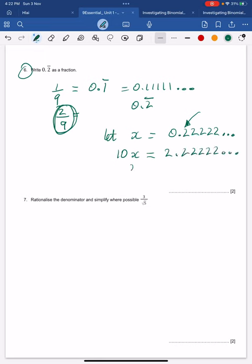Then if I copy and paste the first equation down again, now if I subtract both sides, can you see what you get? You get 9x here, and can you see that you get all the 2's cancelling out here? And you get 2, therefore x equals 2/9.